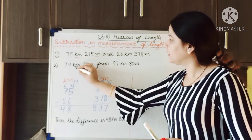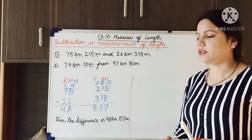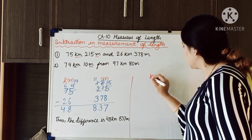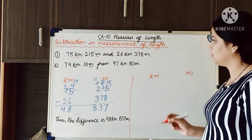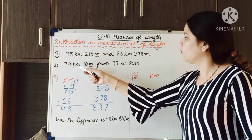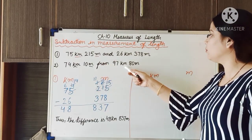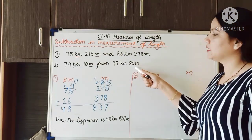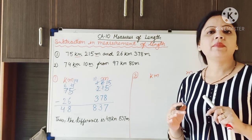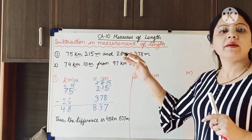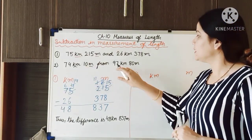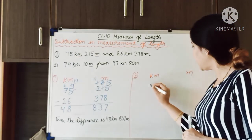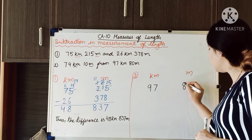As you can see here again the units are kilometer and meter. So we will make 2 different columns: kilometer and meter. The question is to subtract 74 kilometer and 10 meter from 97 kilometer and 80 meter. Always remember while doing subtraction we have to write the bigger number first. So the bigger number here is 97 kilometer and 80 meter, which we write first.